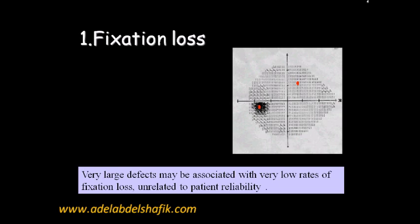During the test, every now and then the program will send a stimulus to the location of the blind spot. The patient should not see it. If the patient answers that he sees it, then the eye is being moved. This is repeated several times. For example, if it's repeated 20 times and the patient moves his eye three out of those 20, the printout will show 3/20. For a reliable test, this should be less than 33% — up to around seven out of twenty. If below that, it's a reliable test.